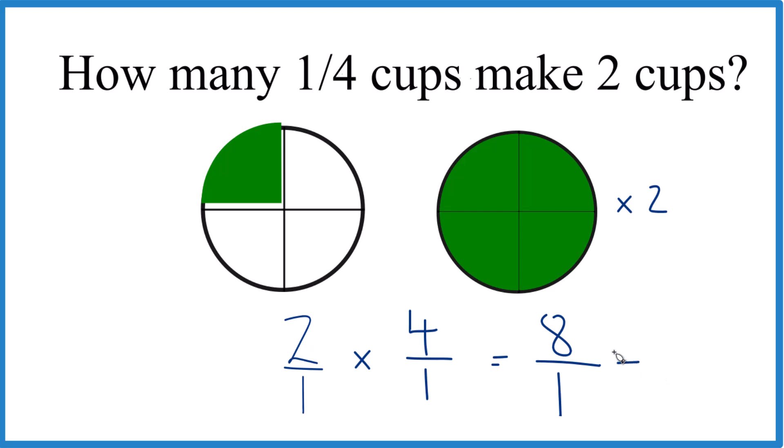We have eight over one. Eight divided by one is eight. And that's what we found before. We have one, two, three, four to make one cup. And since we want two cups, we just multiply that by two.